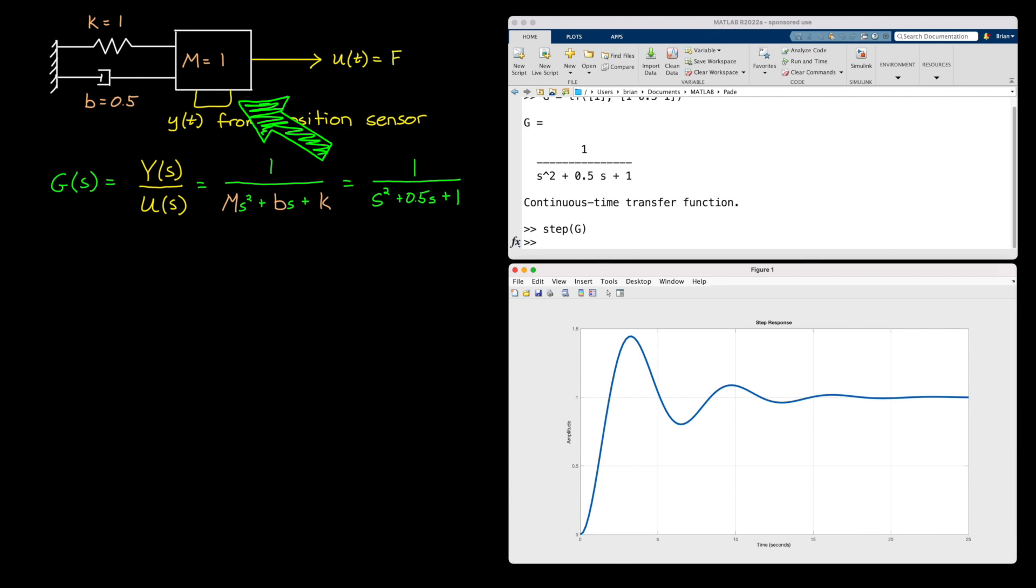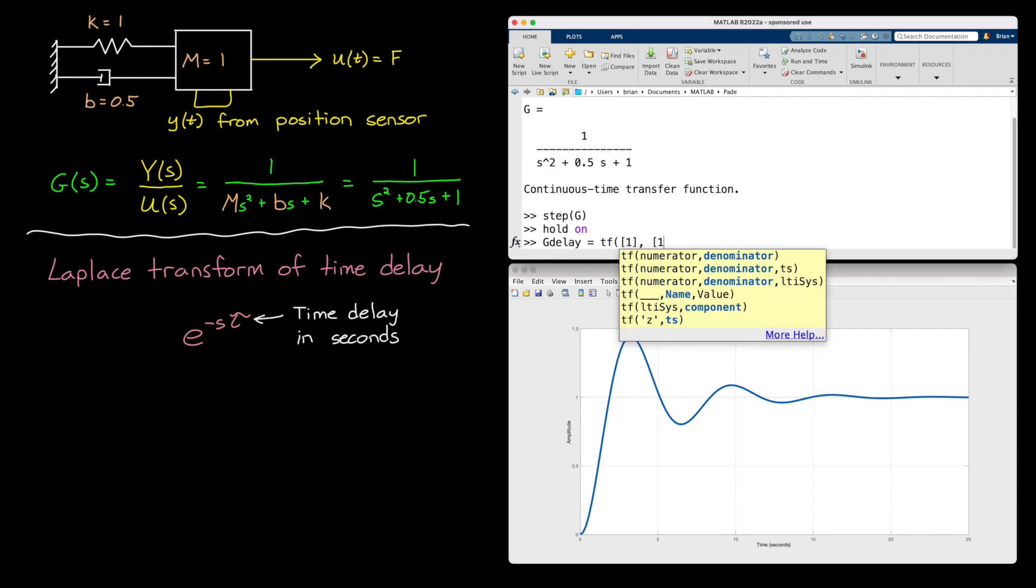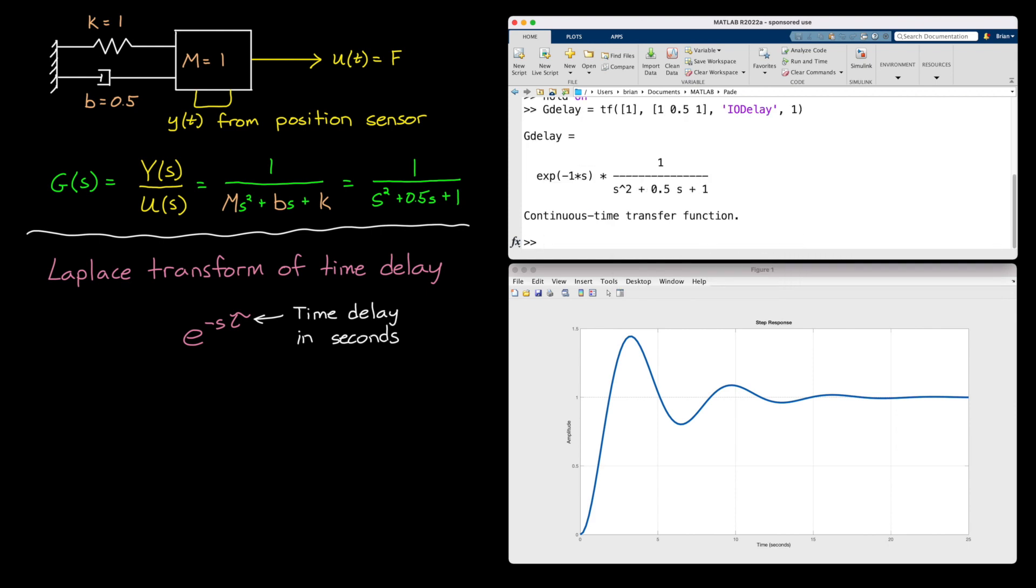However, let's assume that the real sensor actually has some delay. Maybe it takes an entire second for the sensor to calculate and output a measurement. If we want to incorporate this delay in our model, we can do so with a transfer function. The Laplace transform of a time delay is e to the minus s tau, where tau is the length of the delay in seconds. So a one second delay would be e to the minus s. In MATLAB, I can add a delay when I create the transfer function. And as expected, our model is now e to the minus s times the original transfer function.